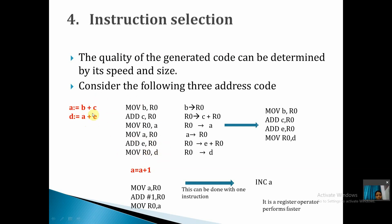These six instructions can be reduced to four by eliminating two redundant steps — specifically, storing the result to a and then reloading it into the register. Instead, the result from R0 is directly added with e, and then the final result is stored in d from R0. This reduces the size of the instructions, which is very important in instruction selection.